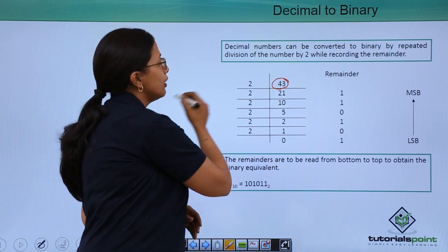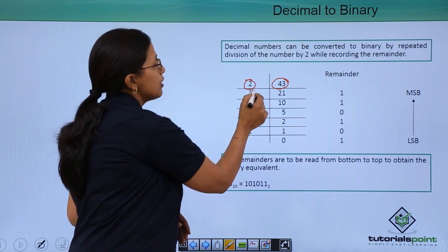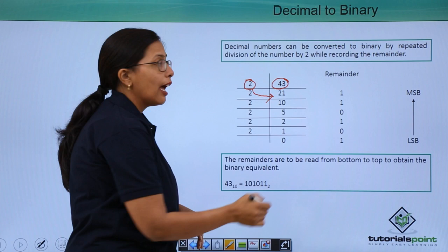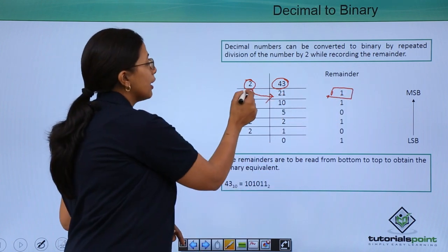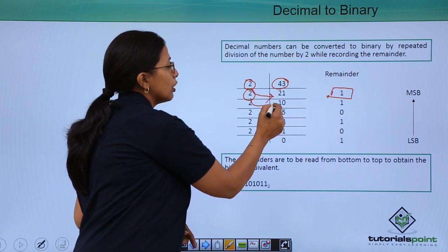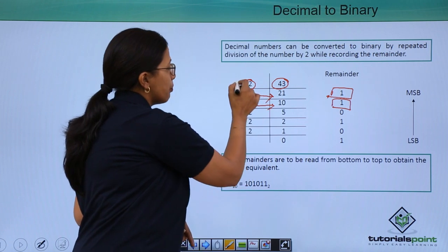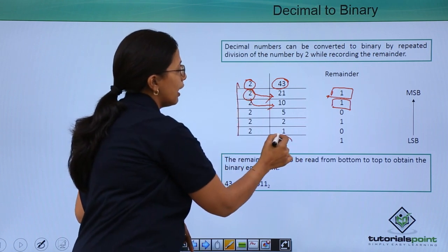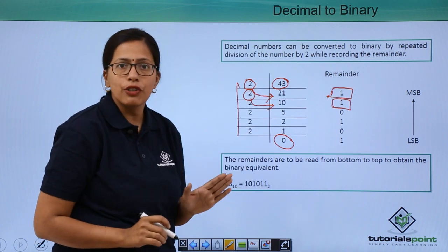Here is the number 43 and we are going to divide it by 2. This is the quotient that I am getting and this is my remainder. What quotient I have got, I will divide it again by 2, get the quotient, record the remainder. I will proceed like this till I get 0 as my quotient.